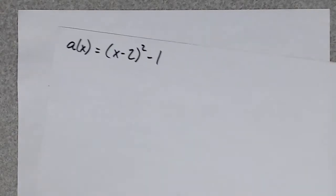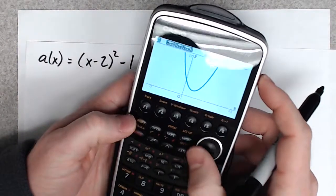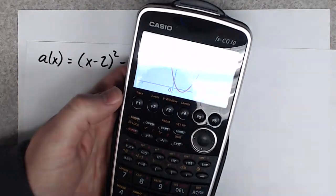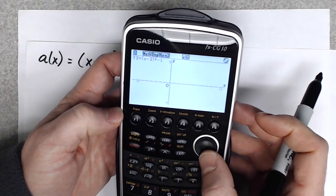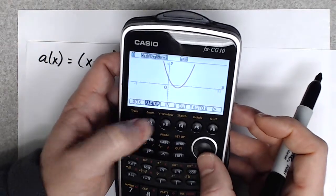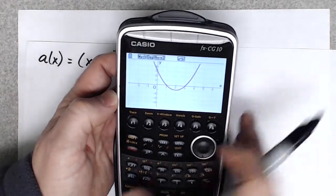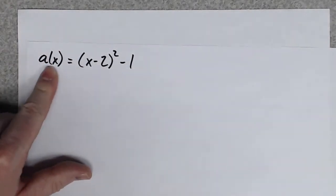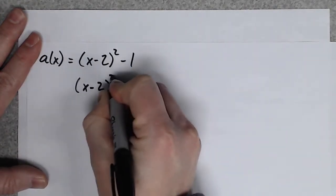Let's try the next one — one that does have x-intercepts. We can graph this to begin with. Looking at the graph I definitely have two x-intercepts, and if I zoom in it looks like they're at 1 and 3. But to get that, remember all you're doing is setting the whole function equal to zero — replacing y with zero to find the x-intercepts.